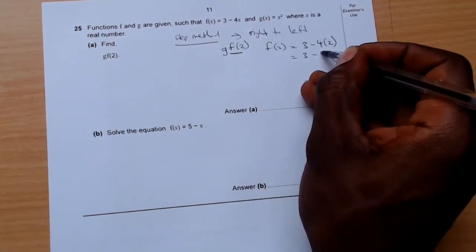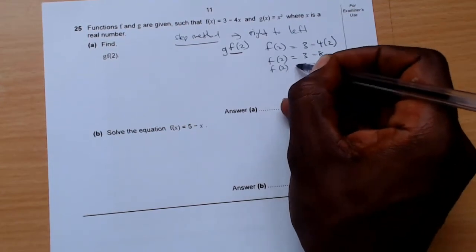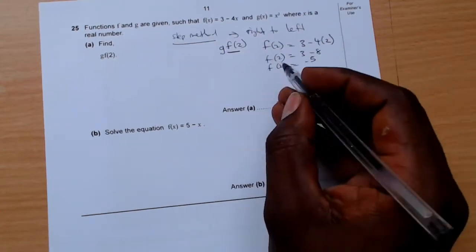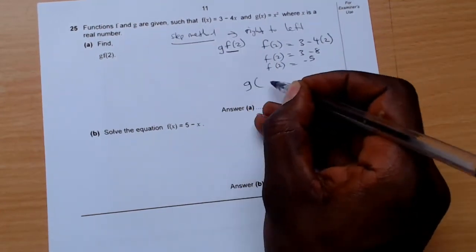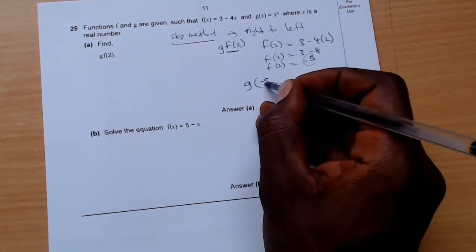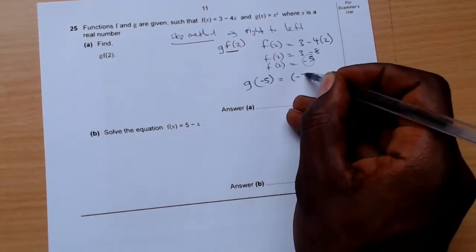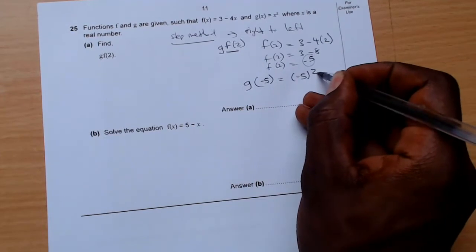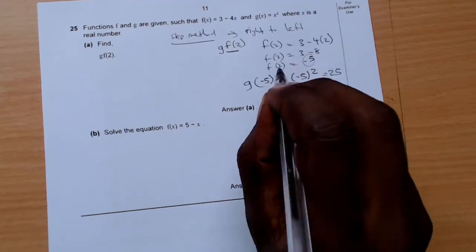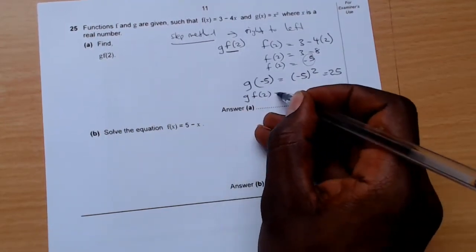f(2) is negative 5. Once you have f(2), now you look for g(negative 5), because f(2) is negative 5. So you come and put negative 5 squared, so you get positive 25. So g(f(2)) is positive 25.